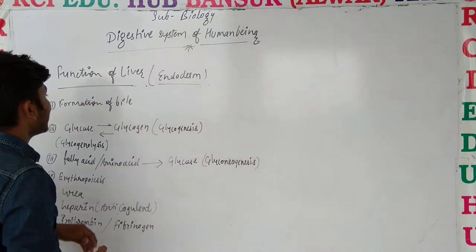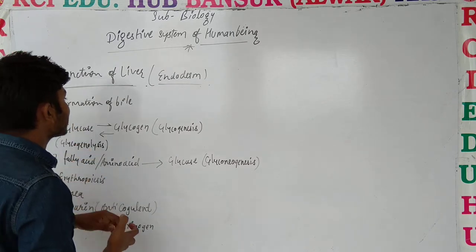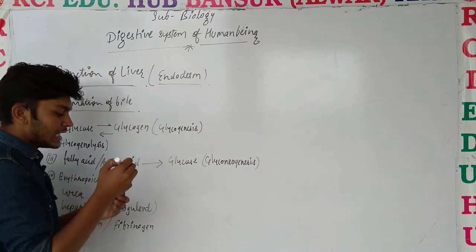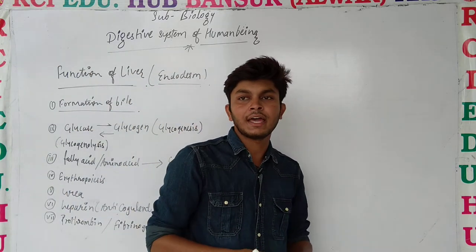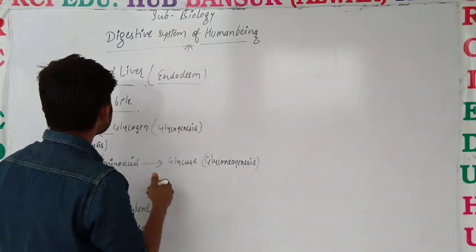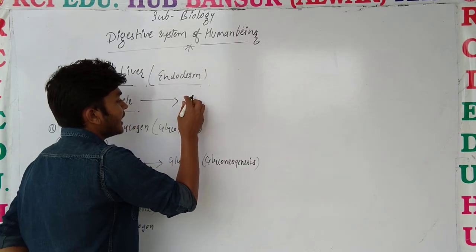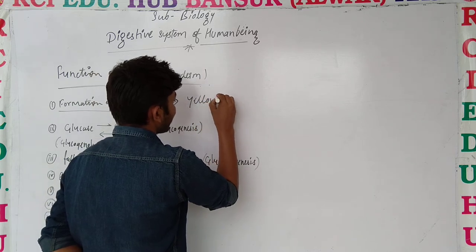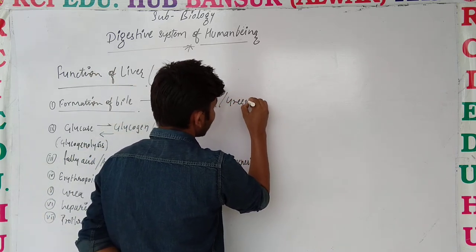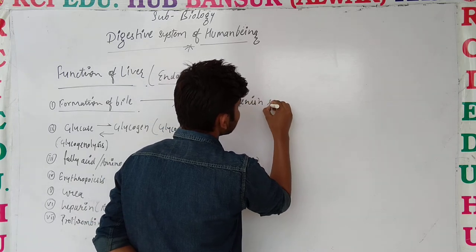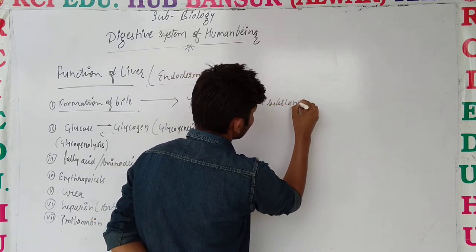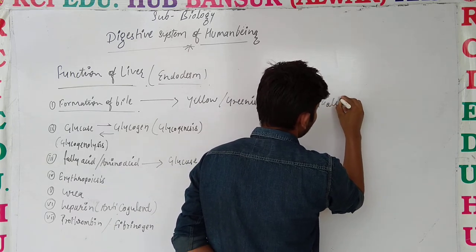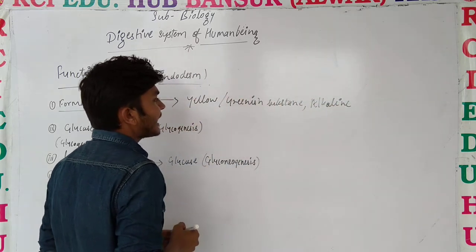We will talk about the liver and its functions. The first function is the formation of bile. Bile is the liver's main product — it is a yellow-green substance which is quite alkaline.